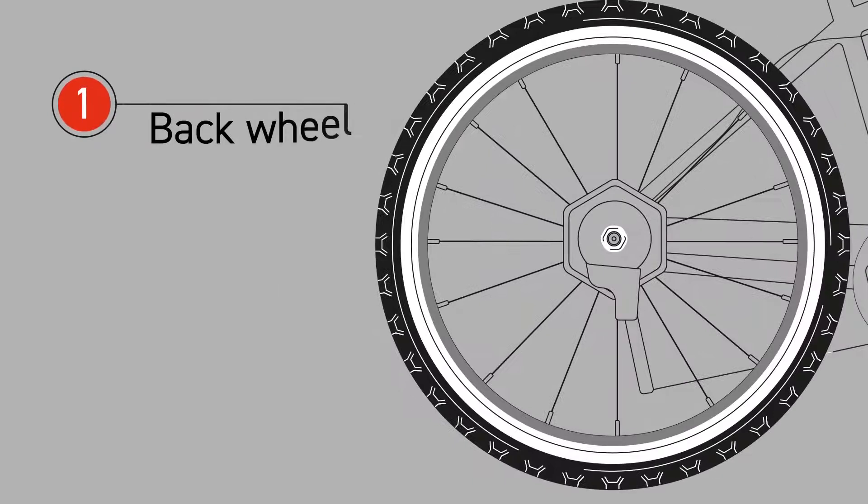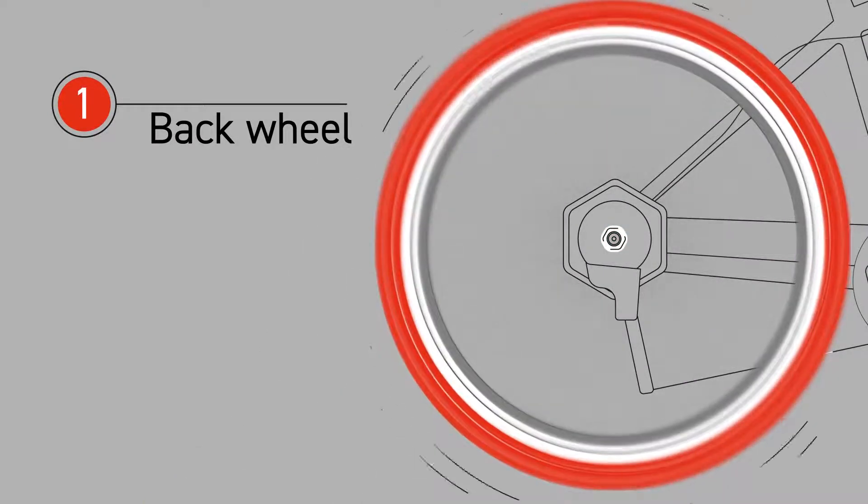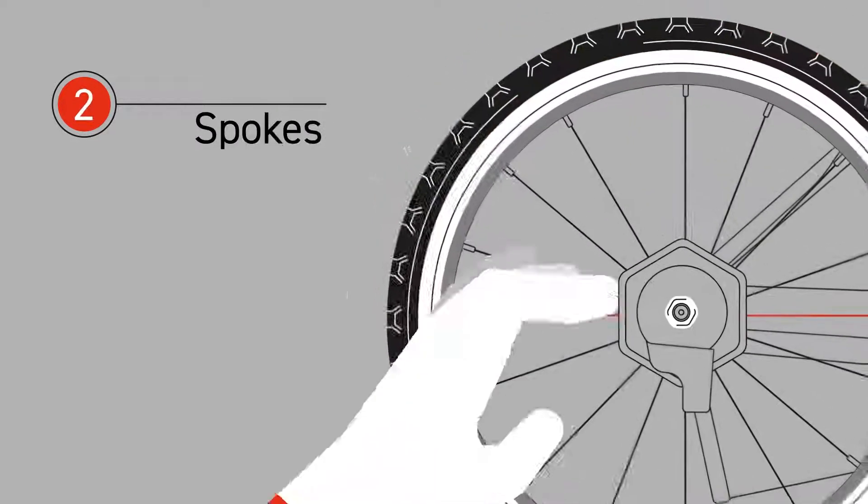First, check your back wheel is fitted securely and give it a spin to make sure it's aligned correctly. Then pluck your spokes to check their tension.